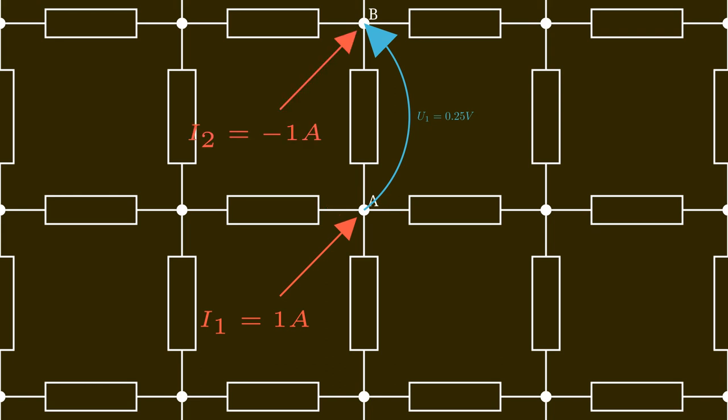The same thing would happen if we sent in the current to any other point — the voltage between that point and any neighboring point would always be 0.25 volts. Now let's apply superposition: we send in a second current of minus 1 ampere to point B. The voltage generated by this second source also contributes 0.25 volts across the resistor between A and B, and since both contributions add up positively, the total voltage across that resistor becomes 0.25 plus 0.25 equals 0.5 volts.